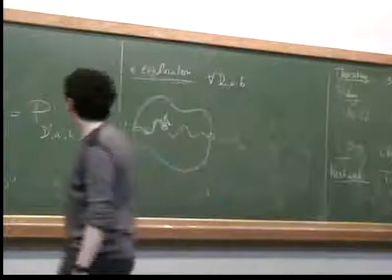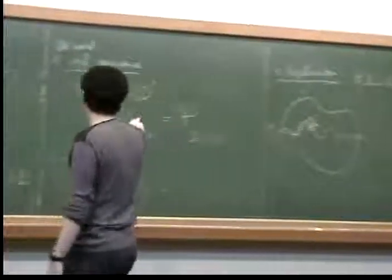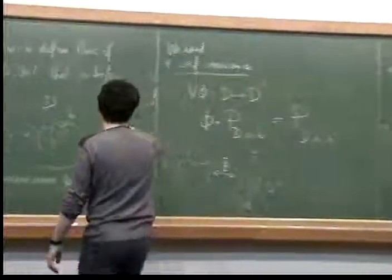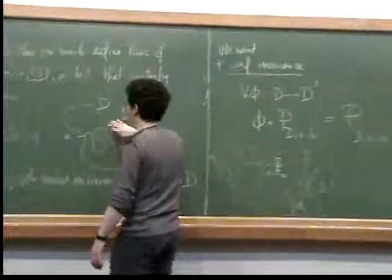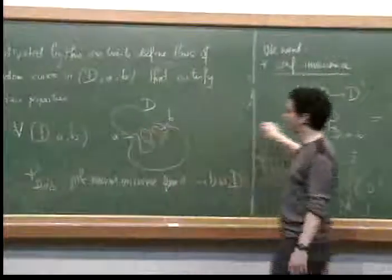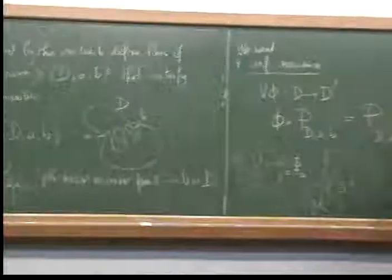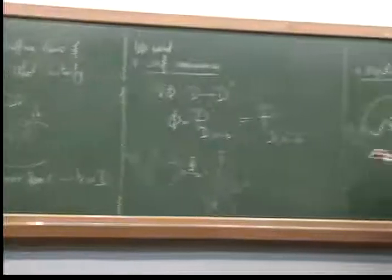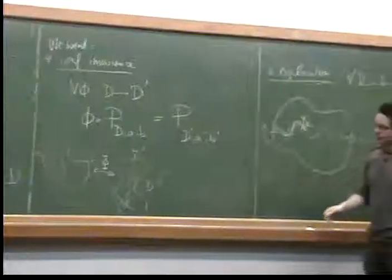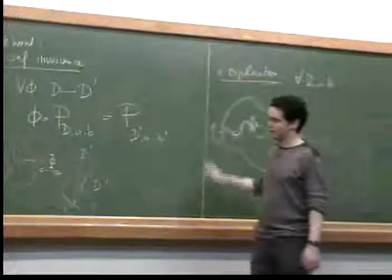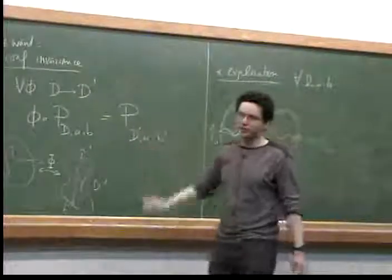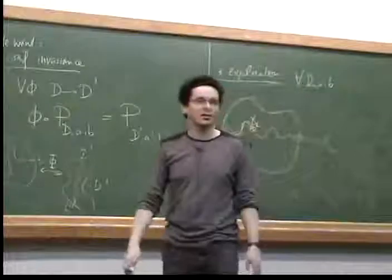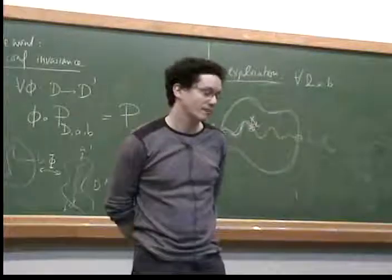Given the experience I have about this, I think I will first start with a non-formal approach. I want to try before giving you the formal definition: an informal description of what SLE is. And then we will move on in the second part of today to a more formal description. Remember what we are after: we are trying to define a random curve that has conformal invariance and the exploration property.